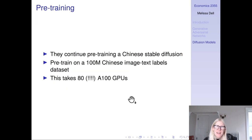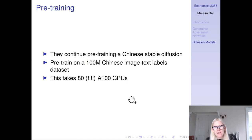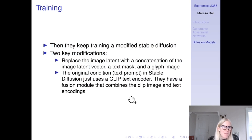They're going to use something much simpler. First, they keep pre-training Chinese stable diffusion — they have 100 million Chinese image-text label pairs and they do this on 80 A100 GPUs. Even 8 A100 GPUs would put you out several hundred thousand dollars, maybe half a million, so this is a very compute-intensive task you could only do if you're the largest telecom company in China or you're OpenAI. But then they further train a modified version of stable diffusion.